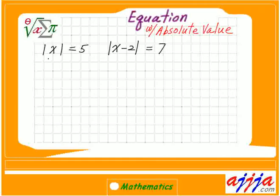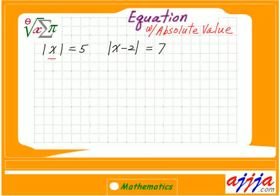So that means, inside of this one is a positive or negative. Depends on if this one is a positive or zero, then x is just 5.